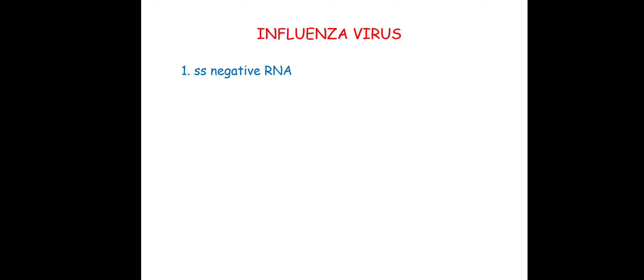These influenza viruses are of two types: influenza A and influenza B. Now you need to know three important things regarding influenza. First, its genome is single-stranded negative RNA. Second, the genome is actually segmented — there are eight strands of this negative RNA.